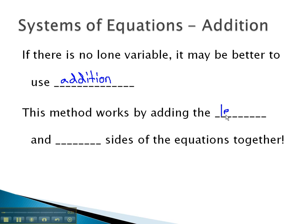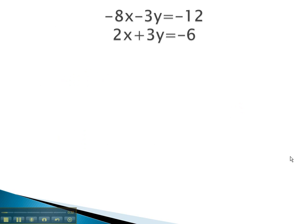This method works by adding the left and right sides of the equations together. As we do so, we try and eliminate one of the variables.